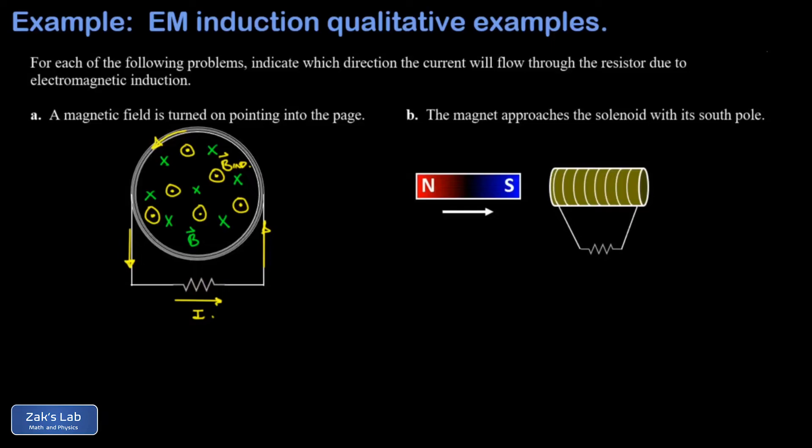And we have to remember that the field lines of a permanent magnet point toward the south pole and away from the north pole. So as we're approaching this coil with the south pole of the magnet, we're introducing new magnetic field lines pointing left through the coils of the solenoid. This means the induced magnetic field is going to point to the right through those coils in order to reduce the change in flux.